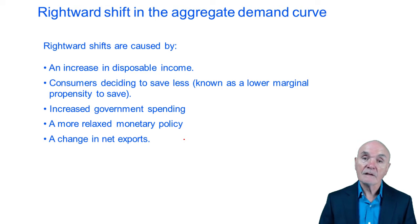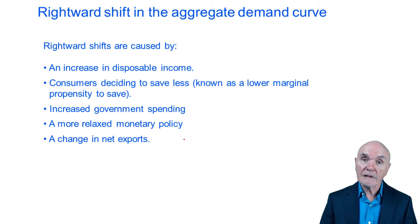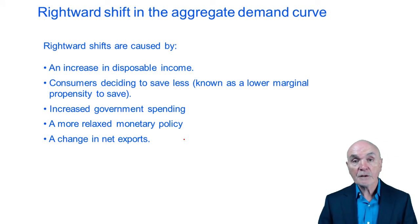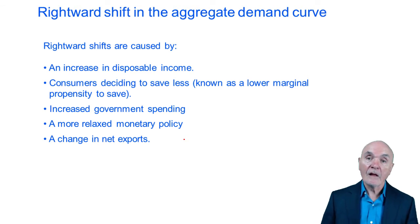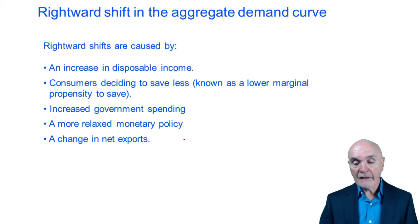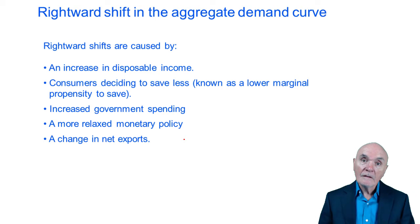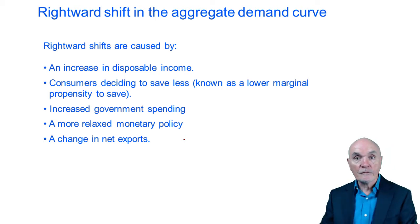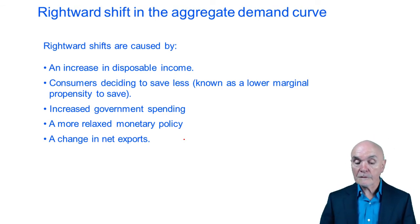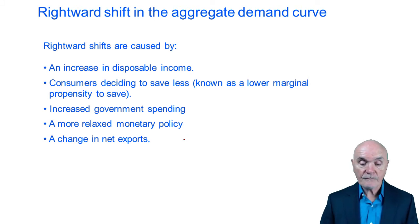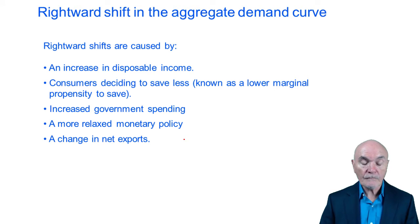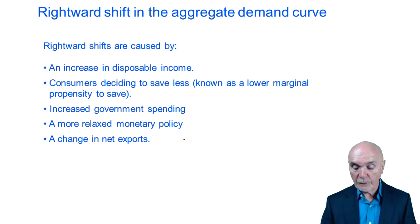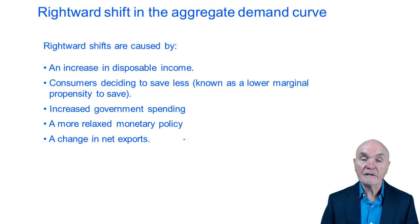Consumers deciding to save less — so they take money out of the bank and simply spend it on goods. Even though the price of goods has not decreased, people are simply psychologically willing to spend money. Increase government spending — the government steps in and starts buying. So you could think of a health service: the hospital has to feed patients and the policy is to feed them much more food, so that government spending is buying food from producers and supermarkets that otherwise wouldn't have been bought. A more relaxed monetary policy, like interest rates going down and making it easy for people to borrow money. And a change in net exports will stimulate a rightward shift in the demand curve.